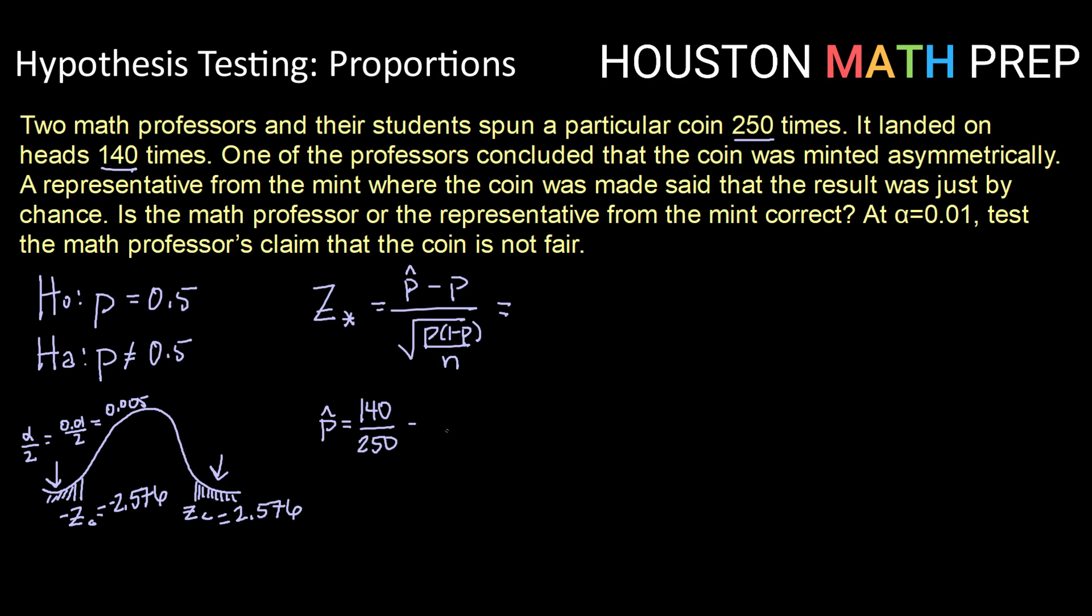So 140 divided by 250 is 0.56 or 56%. So 0.56 minus 0.5 divided by, notice again this is p, not p-hat. So this will be 0.5 times 1 minus 0.5 all over the square root of 250. Doing that calculation, we get a test statistic of 1.897.